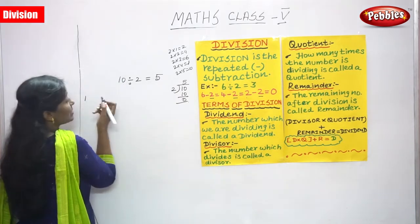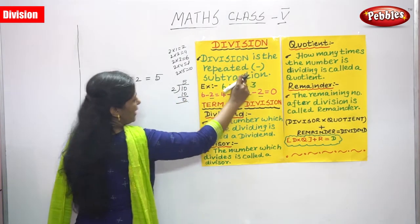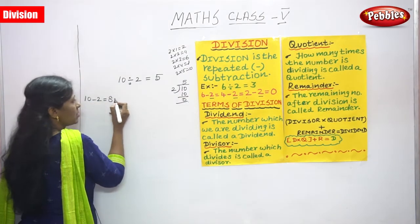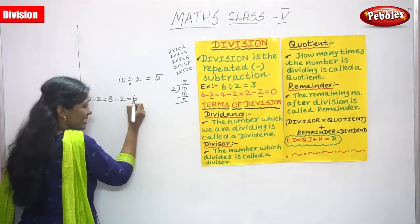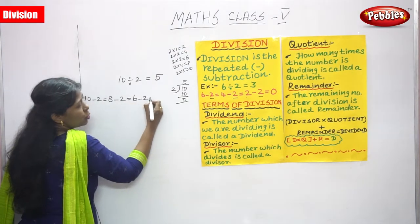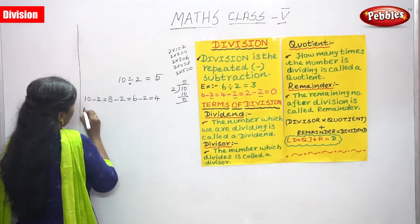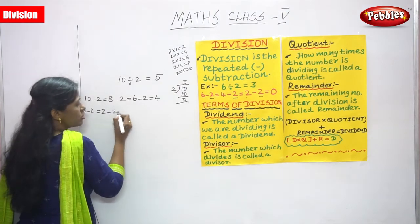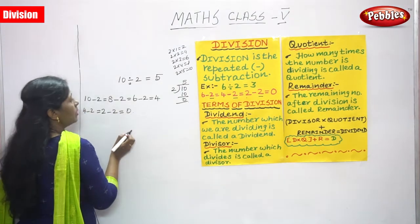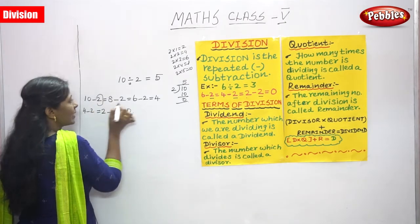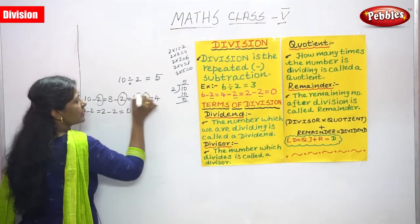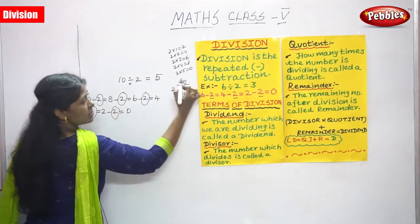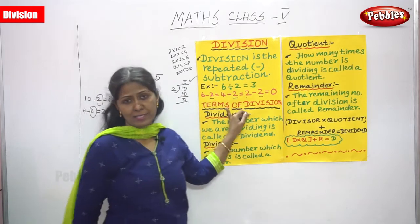Now I go for subtraction, because division is repeated subtraction. So 10 minus 2 we will get 8, 8 minus 2 we will get 6, 6 minus 2 we will get 4, 4 minus 2 we will get 2, and 2 minus 2 we will get 0. How many times does 2 come? 1 time, 2 times, 3 times, 4 times, 5 times. The answer is 5. That's the right answer.